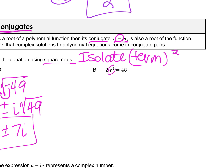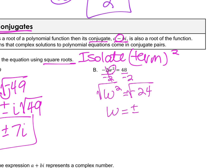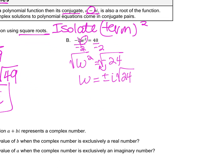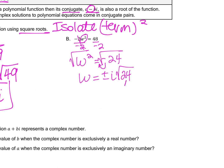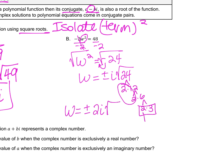For part b, isolate the squared term first. Negative 2 is not squared, so divide both sides by negative 2. Then take the square root to eliminate the squared term, giving w. Remember you get two answers — positive and negative. Bring out the negative as i. Simplify the square root of positive 24 using a factor tree: pair up matching numbers, bring out a 2, leaving 6 inside. So w equals plus or minus 2i square root of 6.